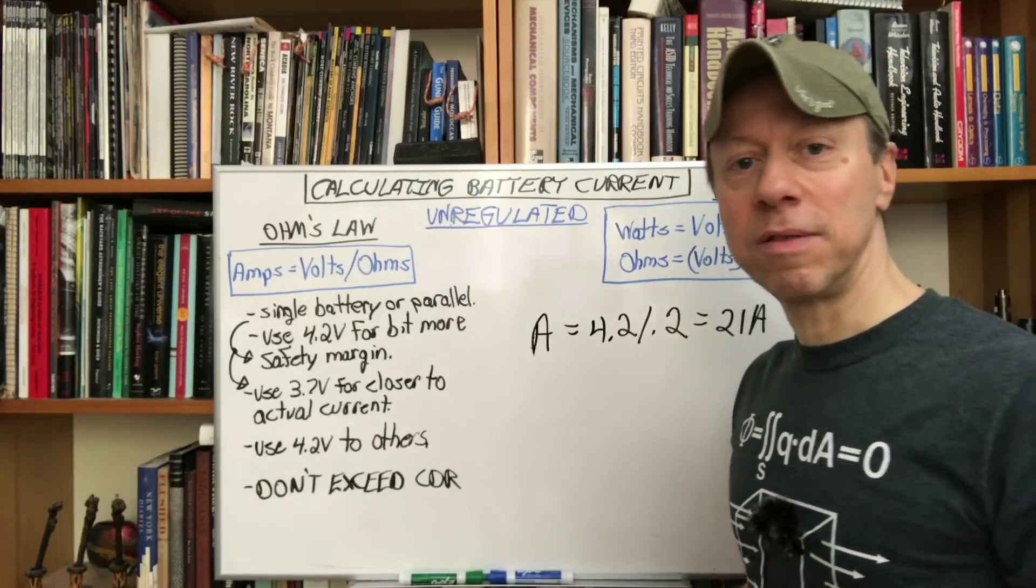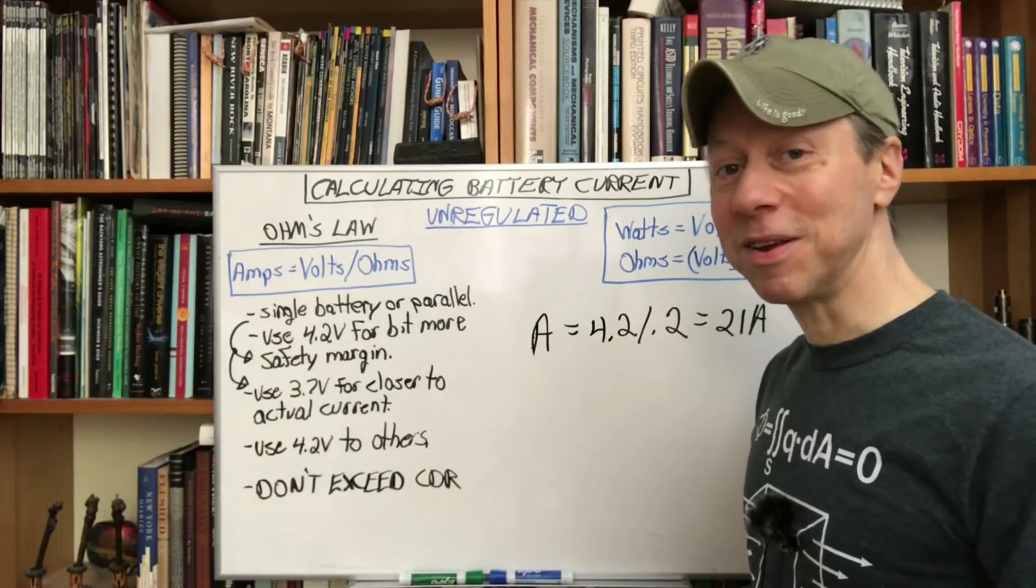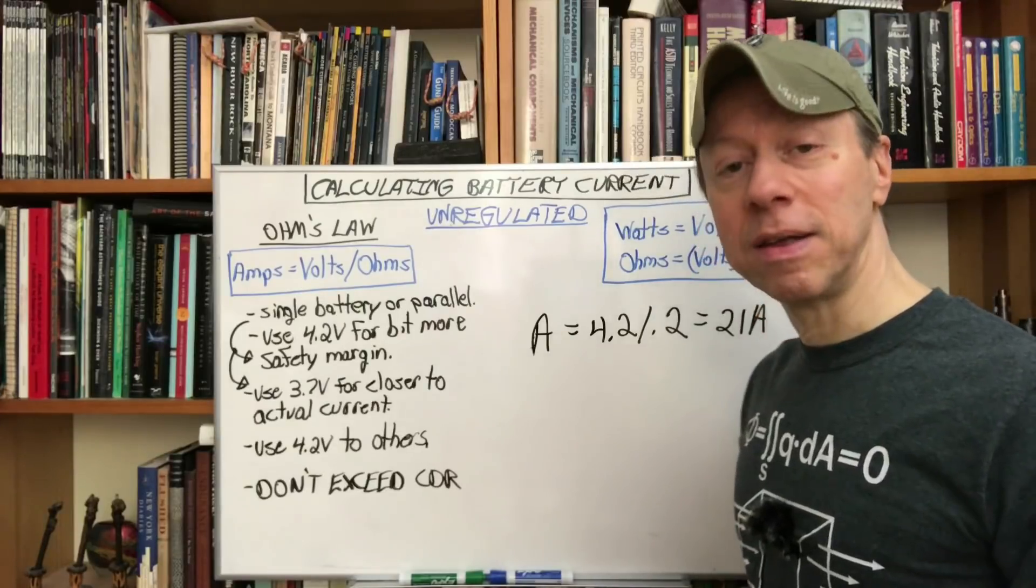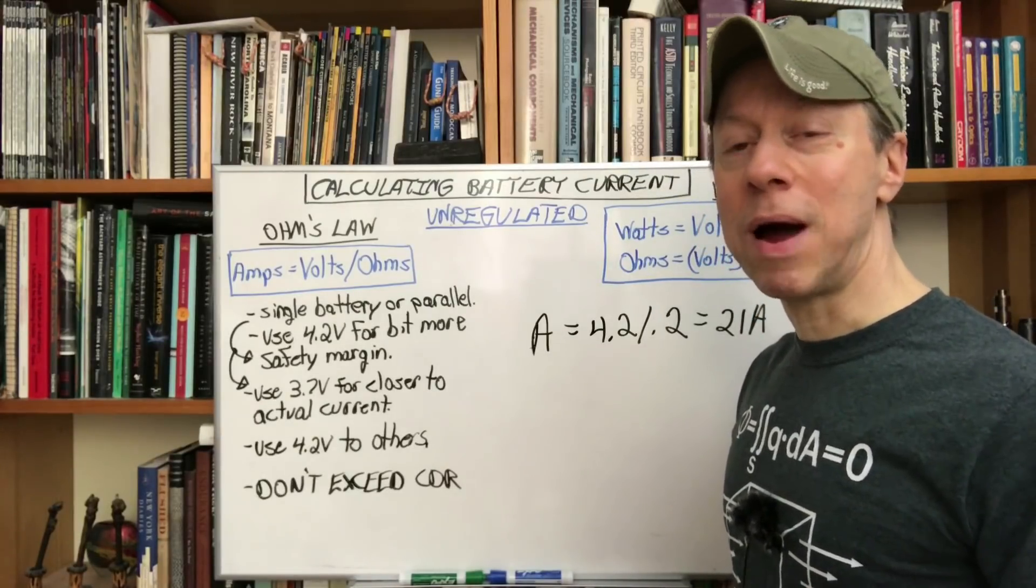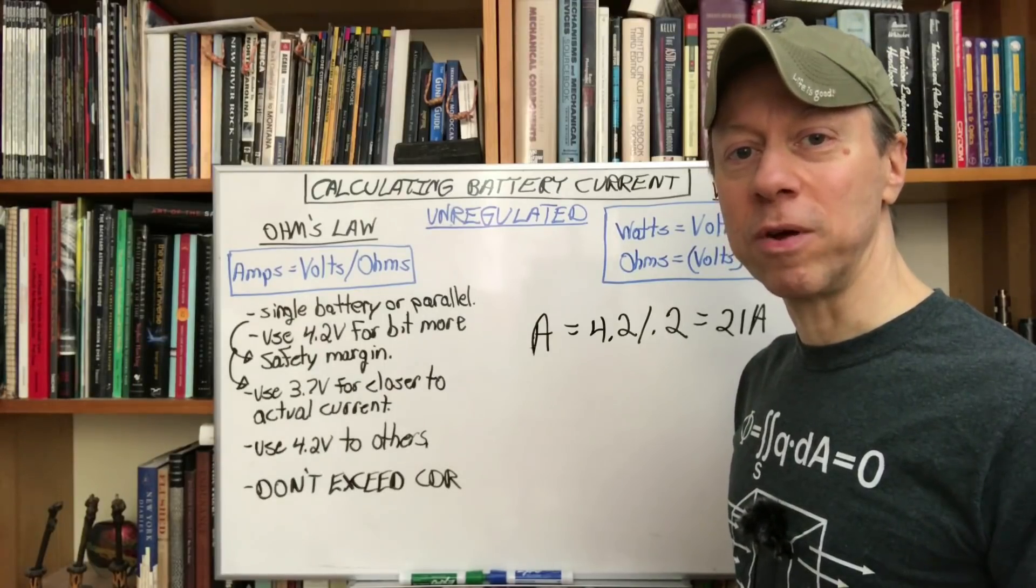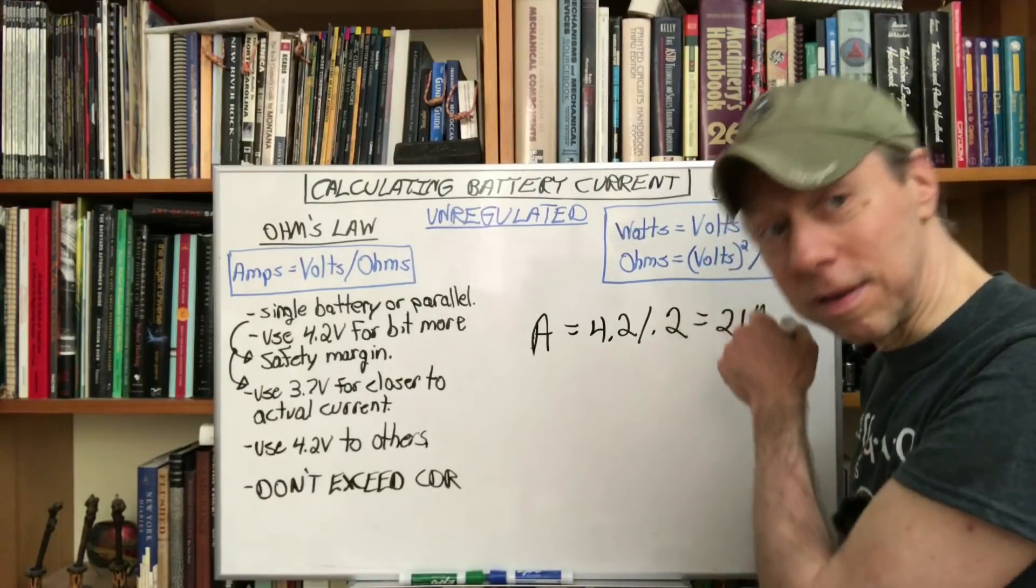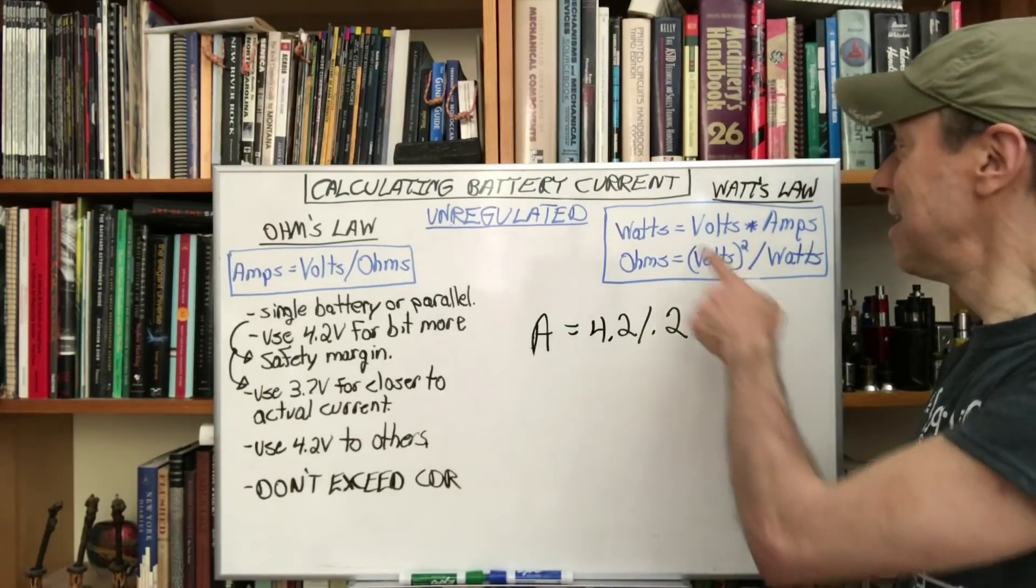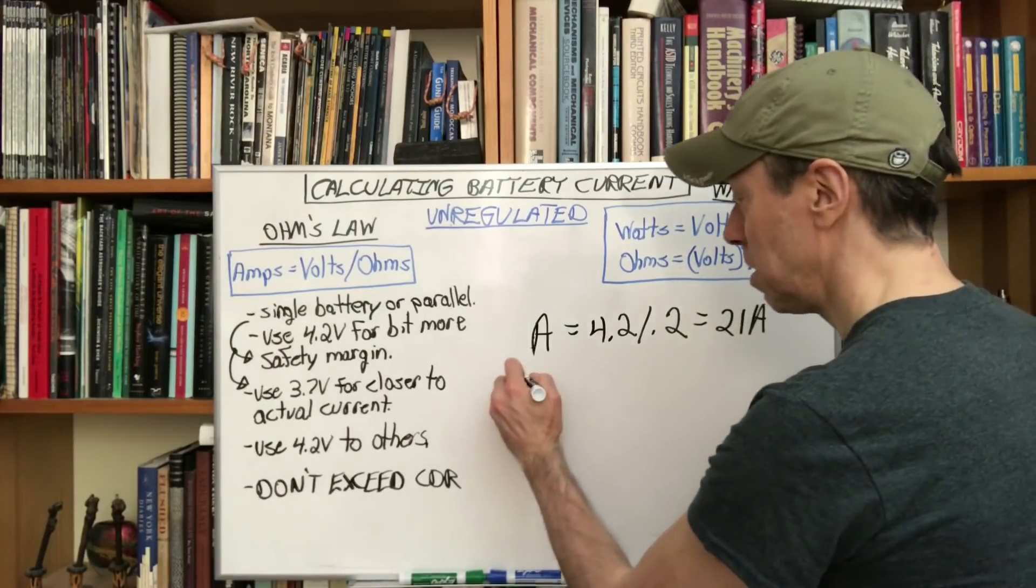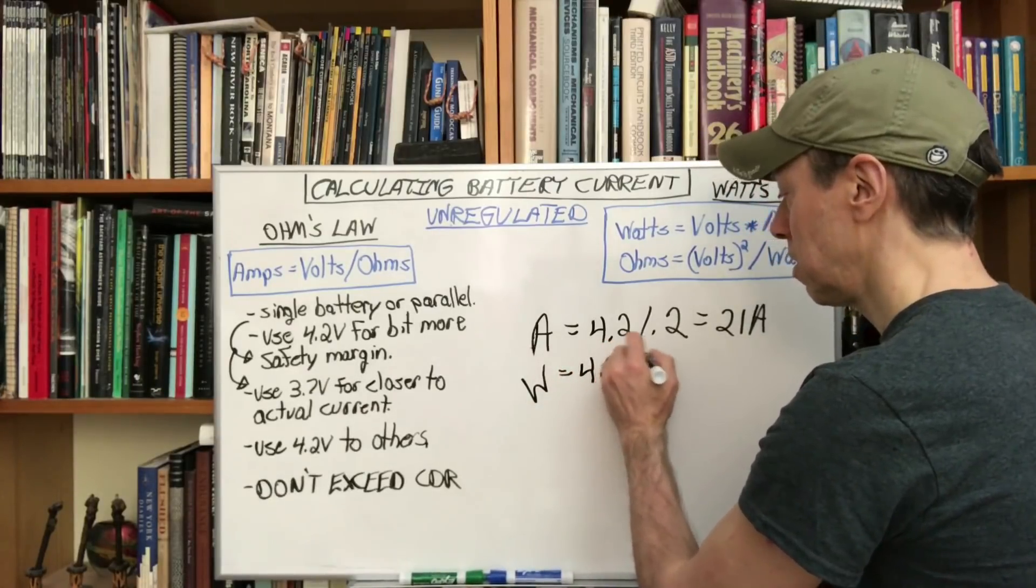Now for that something like the VTC 5A, 25 amp battery would be fantastic. It's also one of the hardest hitting batteries and a great one to use overall. Now something you also might want to calculate is what kind of power level is that, where am I in terms of what I may know for a vaping experience with a regulated mod. That's where Watt's law comes in. The wattage is just volts times amps. So for this we would just do wattage equals 4.2 times 21.